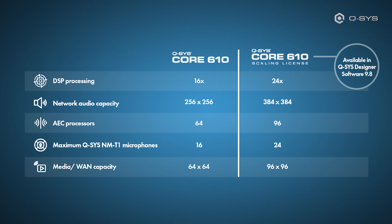The scaling license lets you add another 50% of processing power, meaning 50% more network audio channels and DSP power.